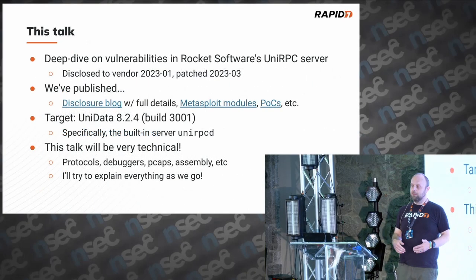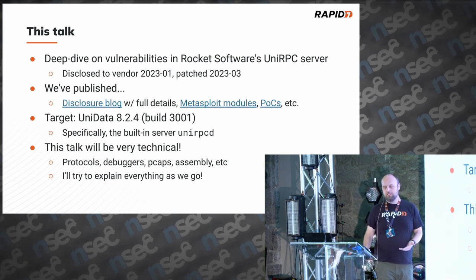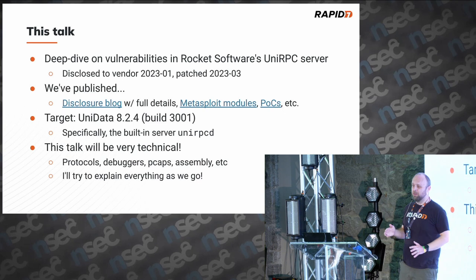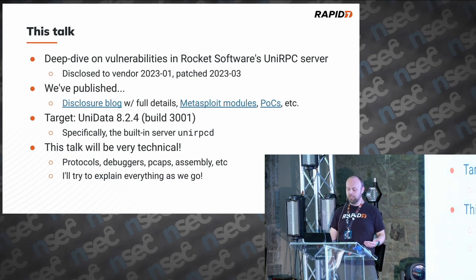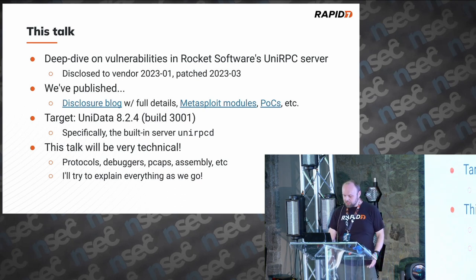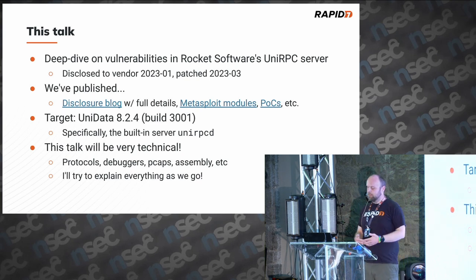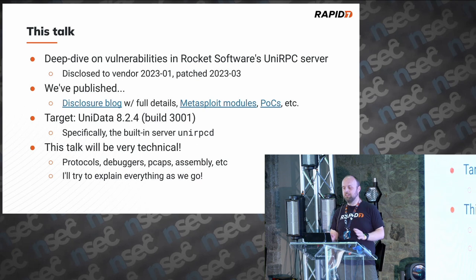This is going to be a deep dive looking at some vulnerabilities specifically in Rocket Software UniRPC server. I didn't name this software in the title because the vulnerabilities weren't public when I submitted this talk. I found these back in January, submitted the talk in January, and then we disclosed everything in March, so it's all out now. We're going to look at software called Unidata 8.2.4 — that was the one on their trials page, so that's the one I chose. I'll talk about protocol stuff, show some packet captures, some assembly, and explain how I approach these kinds of projects.